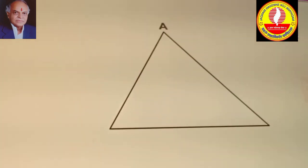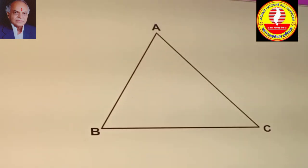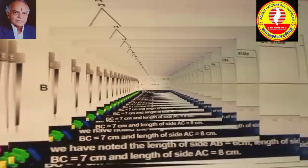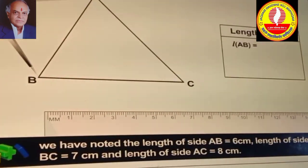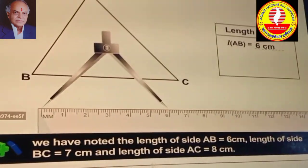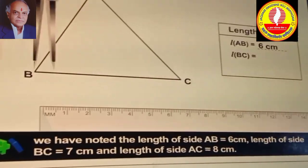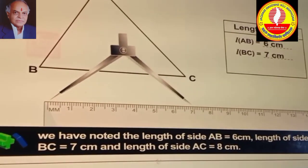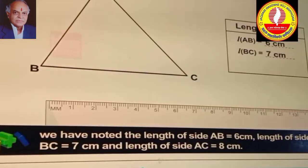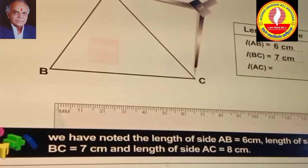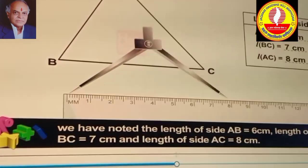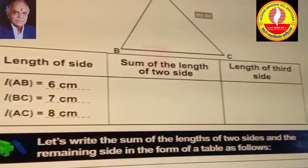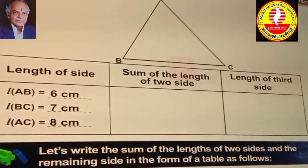Name its vertices A, B, C. Measure the length of its three sides using a divider and scale. And enter them in the table. Length of side AB is equal to 6 centimeters. Length of side BC is equal to 7 centimeters. Let us write the sum of the lengths of two sides and the remaining side in the form of a table as follows.